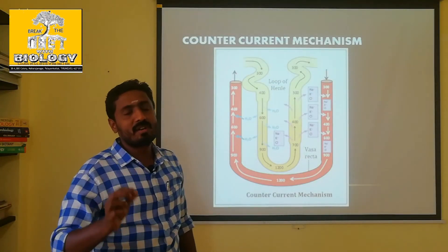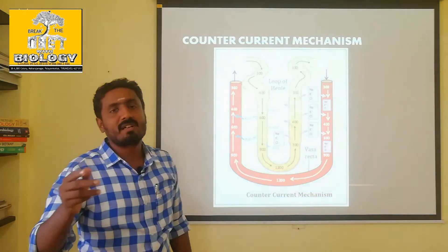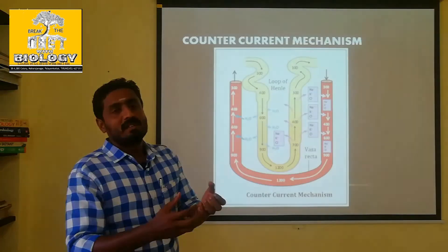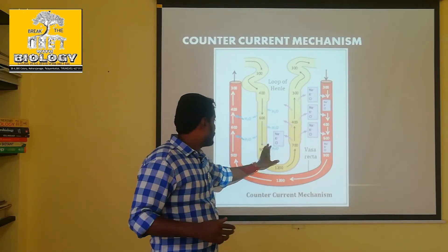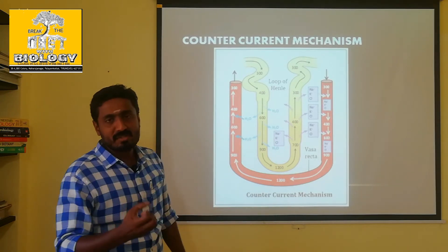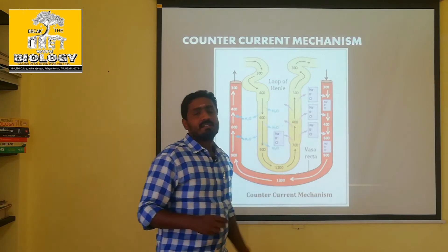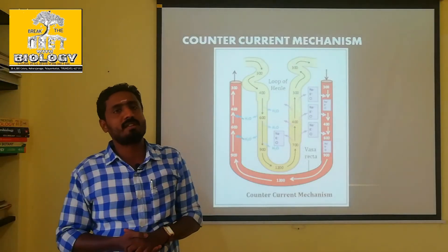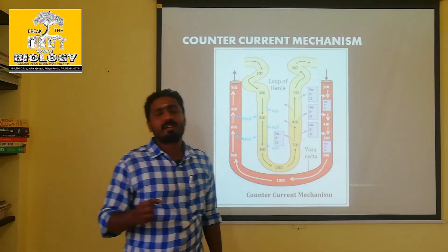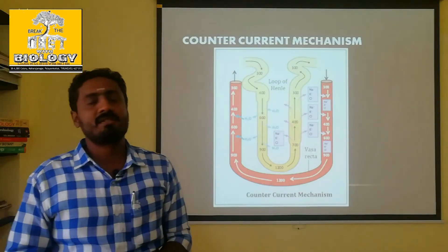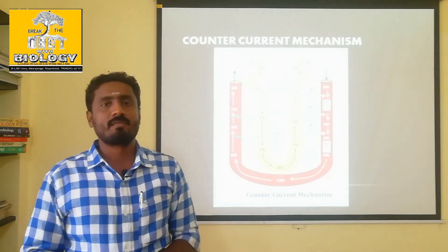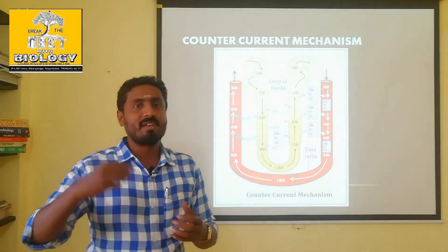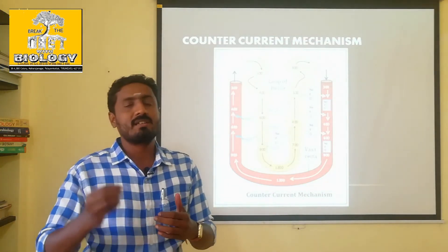This counter-current mechanism is very efficient. What we need to do is conserve water through the nephron. With renal filtration — also called urinal filtration — since the renal filtration is concentrated, you can collect concentrated urine. The urine is concentrated.